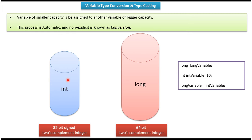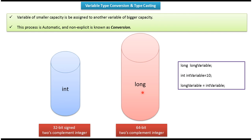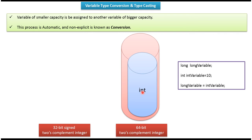Here you can see int — the size of int is 32 bit. And here you can see long — the size of long is 64 bit. So int is a smaller capacity variable and long is a bigger capacity variable. Type conversion is nothing but assigning a smaller capacity variable to a bigger capacity variable, and it is automatic and non-explicit.